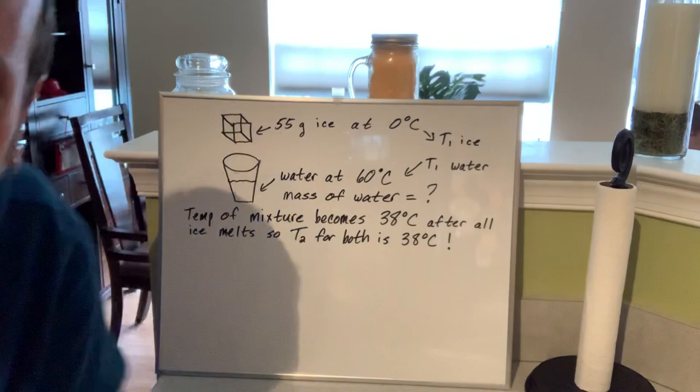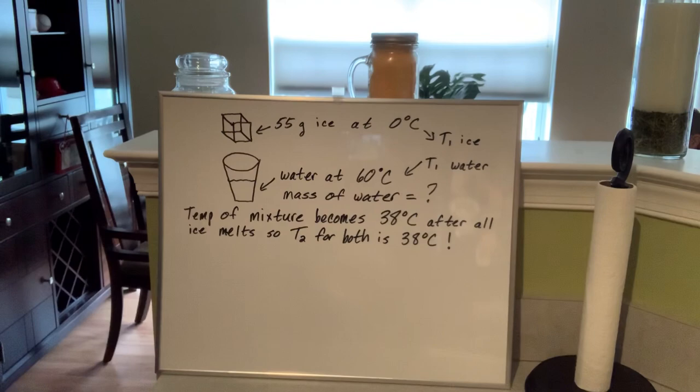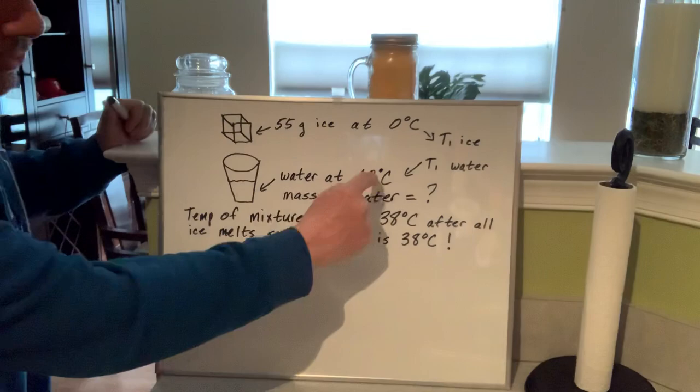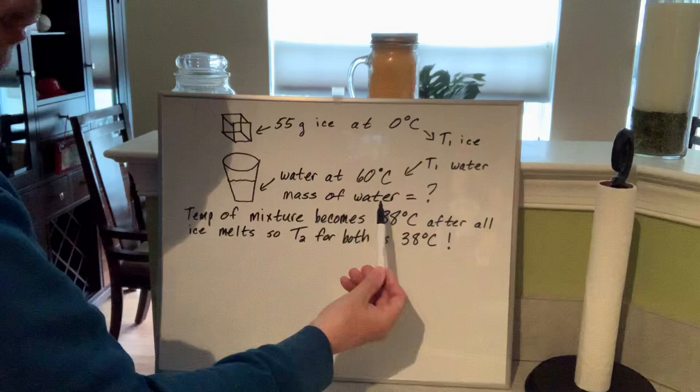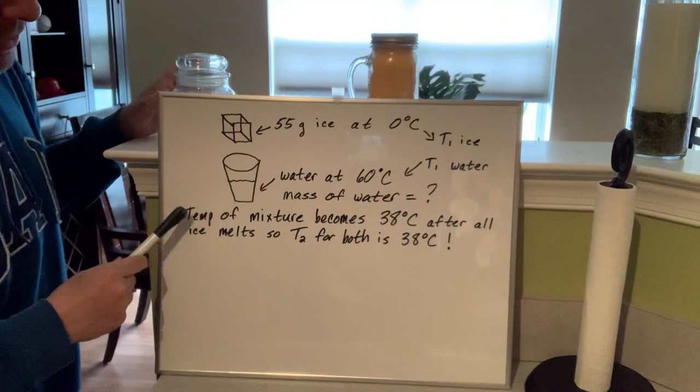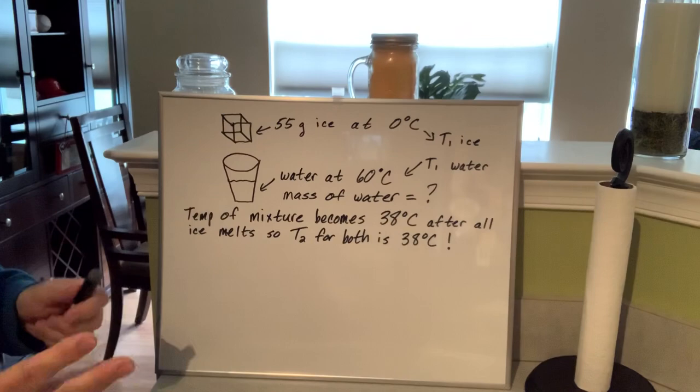So let's take a look at this scenario. We've got 55 grams of ice at zero degrees Celsius — that's its T1, the original temperature of the ice. We're going to drop that into water in a styrofoam cup, and the water is at 60 degrees Celsius, so T1 for the water is 60°C. The question asks us to find the mass of the water in the cup. The temperature of the mixture becomes 38 degrees Celsius after all the ice melts, so T2 for both becomes 38°C.